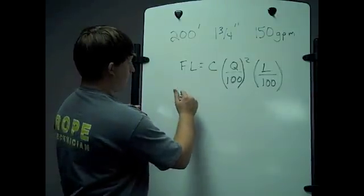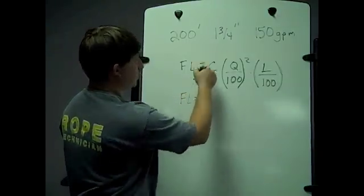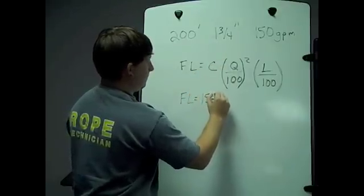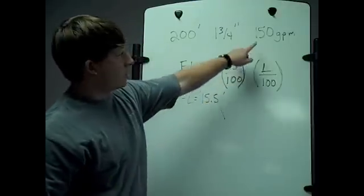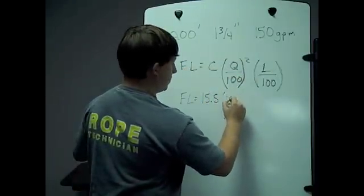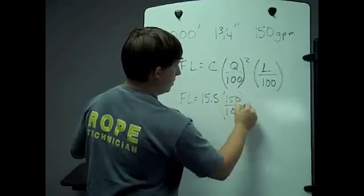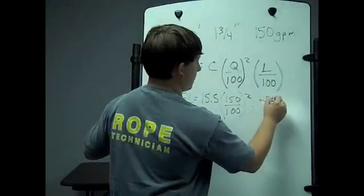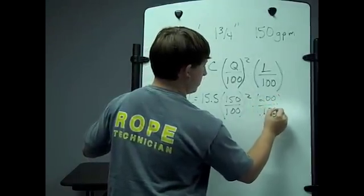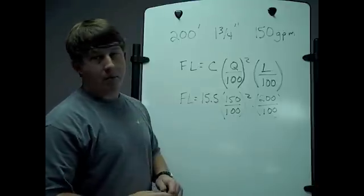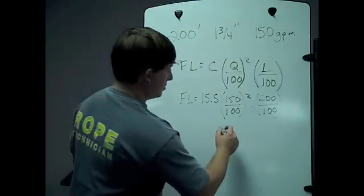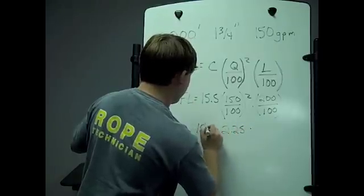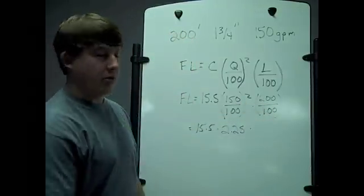I'll rewrite this as: friction loss equals the coefficient for inch-and-three-quarter hose, which is 15.5, times Q — 150 gallons per minute — so 150 over 100 squared, times L, which is 200 feet of hose divided by 100. Working through: 150 divided by 100 is 1.5, and 1.5 squared is 2.25. Then 200 divided by 100 is 2.